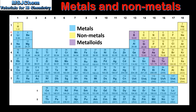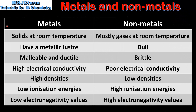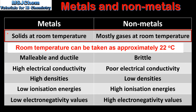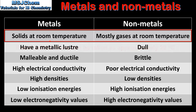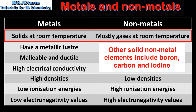Next we'll look at the physical and chemical properties of metals and non-metals. Starting with the state at room temperature: metals are solids at room temperature, with the exception of mercury which is a liquid. Non-metals are mostly gases at room temperature. Note that some non-metals exist as solids, such as sulfur and phosphorus, and one element, bromine, is a liquid at room temperature.